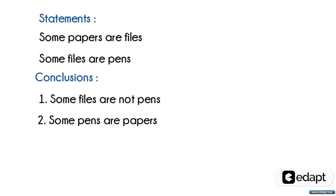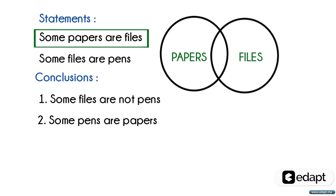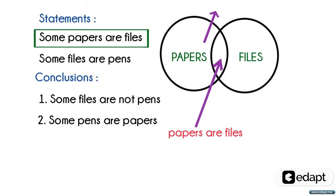The first statement is: some papers are files, meaning that some portion of papers are files. This portion indicates that papers are files, and this portion indicates that papers are not files.